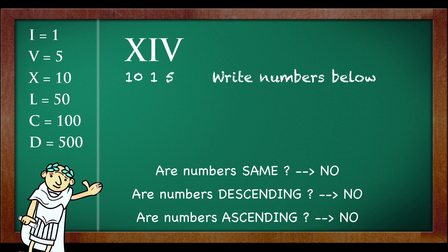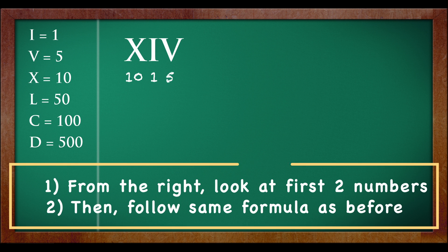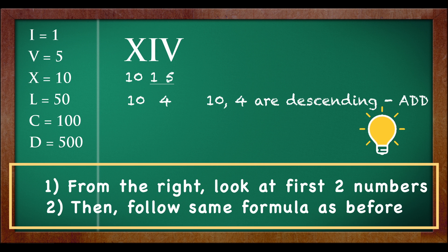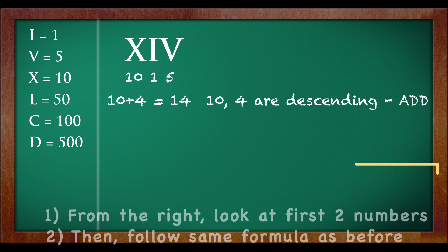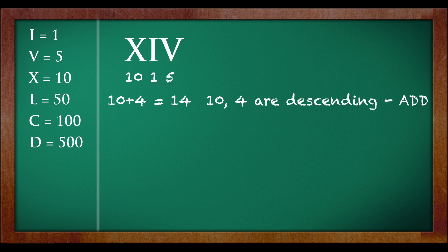Now, look at the two numbers which are from the right. They are 1 and 5. Because it's ascending, we have to subtract. 5 minus 1 is equal to 4. Now, you already know that X is equal to 10. Then, because it's descending order, we just have to add. 10 plus 4 is equal to 14.